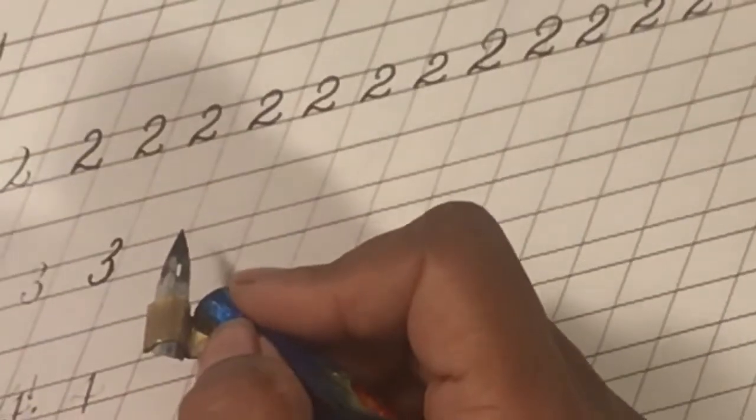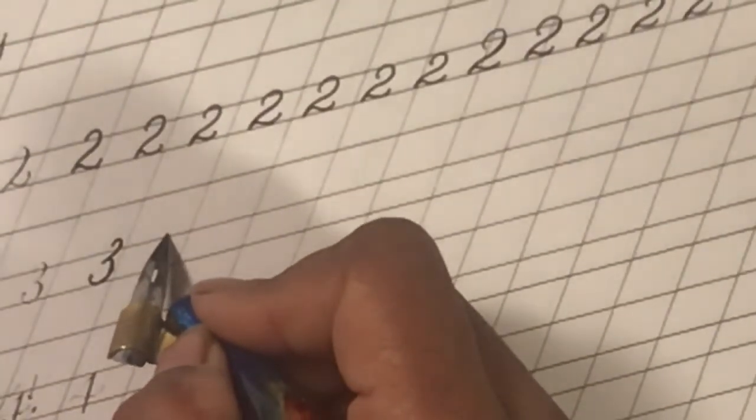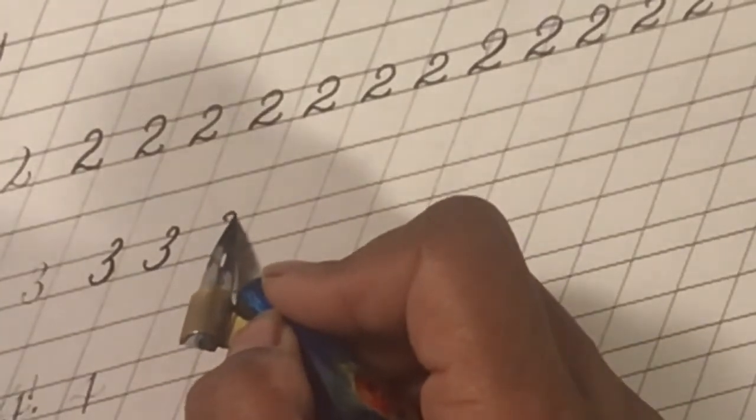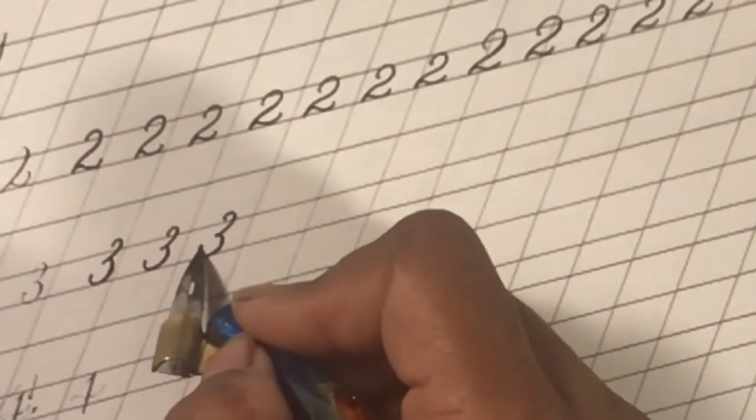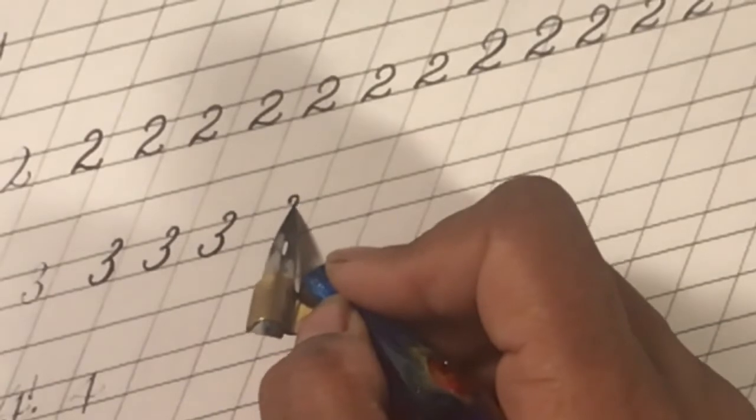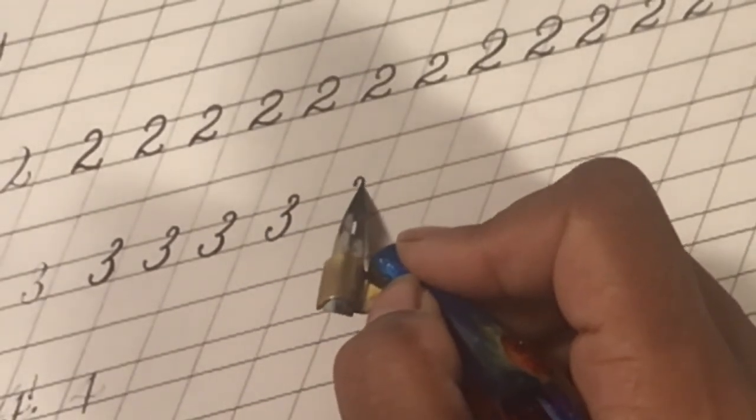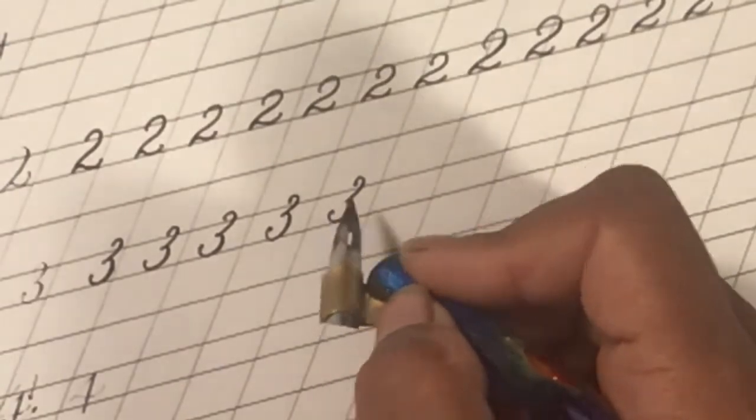So let's get started. So, again, this just shows you how the nib is actually in position. And you can just start with your entry and exit strokes in order to get your shaded lines.